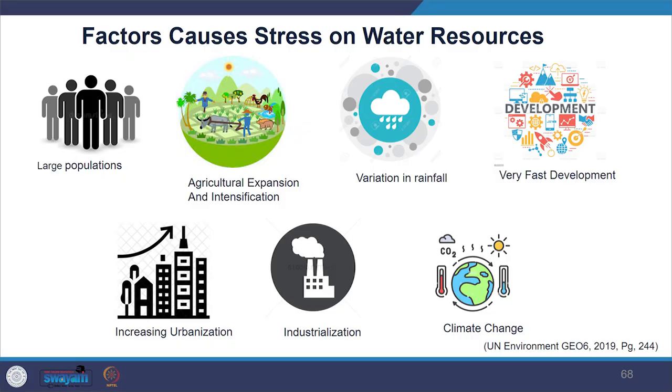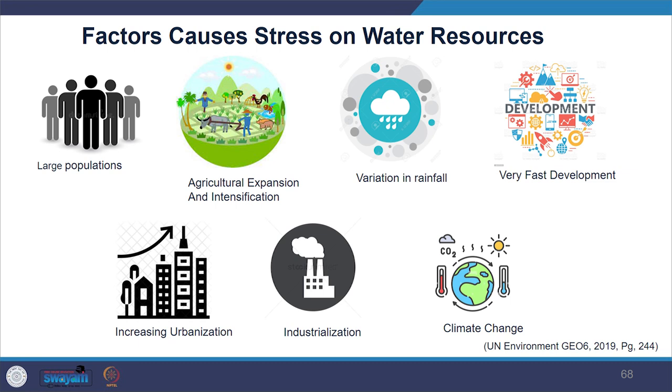Water of appropriate volume and quality is not always available at the right time or place. Water scarcity is common throughout West Asia, the Asia-Pacific region, arid parts of Africa, Latin America, Western United States, and the Middle East. Factors causing water resource stress include large population pressure, agriculture expansion and intensification, variation in rainfall, rapid development, urbanization, industrialization and climate change.